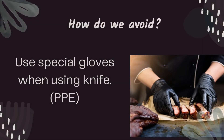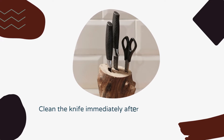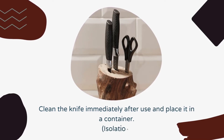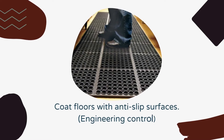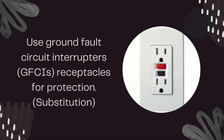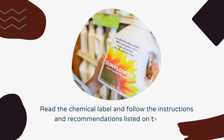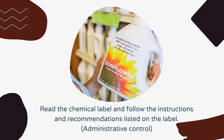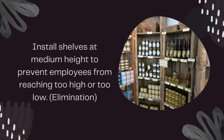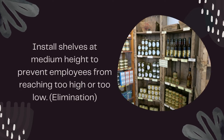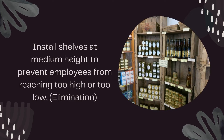As for personal protective equipment control, we can use special gloves when using a knife. Cleaning the knife immediately and placing it in a container is an example of isolation as a control. Coating the floor with anti-slip surfaces is an engineering control. Using a ground fault circuit interrupter receptacle for protection is a substitution. For administrative control, read the chemical label and follow the instructions and recommendations listed on the label. Installing shelves at medium height to prevent employees from reaching too high or too low eliminates the hazard.